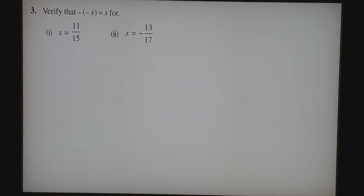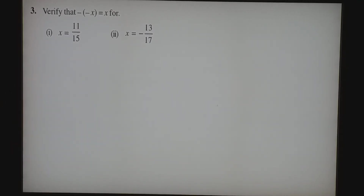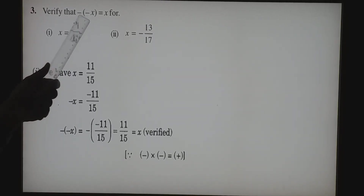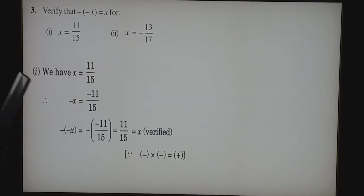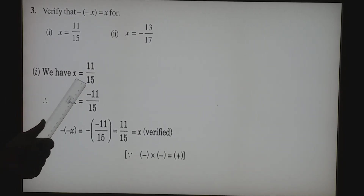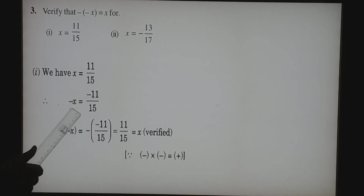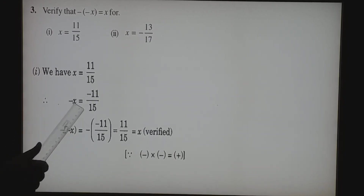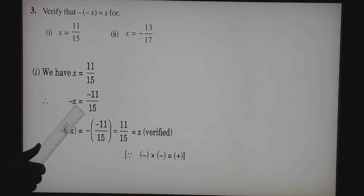Third question: verify that minus of minus X equals X. First part, X equals 11 by 15. We are going to verify that the left hand side equals the right hand side. The X value is 11 by 15. So first we are finding the value of minus X. Since X is a positive rational number, minus X means we change it to negative.